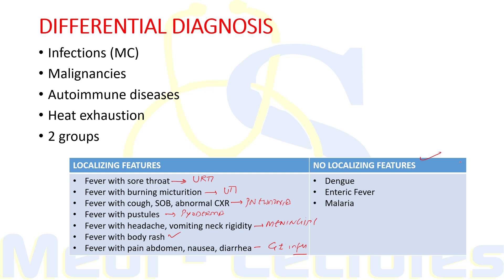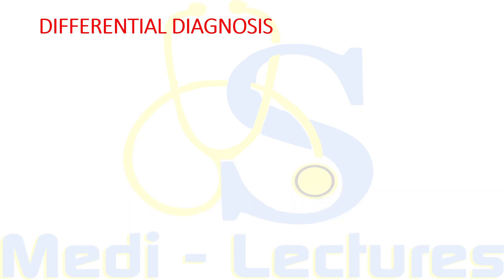In cases with no localizing features, infections like dengue, enteric fever, and malaria should always be suspected. In developing countries, tuberculosis should always be considered in the differential diagnosis of any fever patient presenting for a long time, because it can involve any body organ — from brain meninges to lung, heart, and intestine.